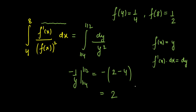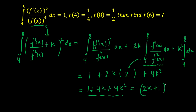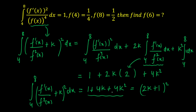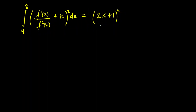Substituting back: the total expression becomes 1 + 2k(2) + 4k² = 1 + 4k + 4k². Observing this, it is a perfect square: (2k + 1)². So the integral from 4 to 8 of [f'(x)/f(x)² + k]² dx equals (2k + 1)².